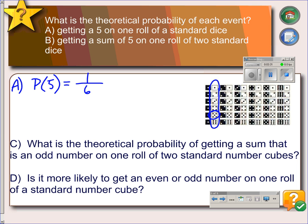Example B: what is the probability of getting a sum of 5 on a roll of 2 standard dice? So we're looking for a sum of 5. And in the picture over here, all the places where we get a sum of 5 would be right here.